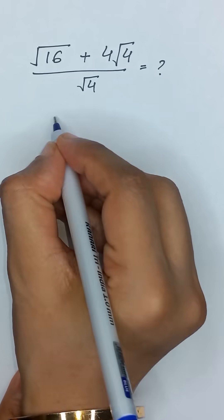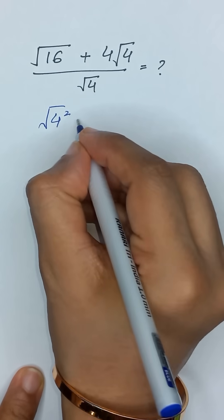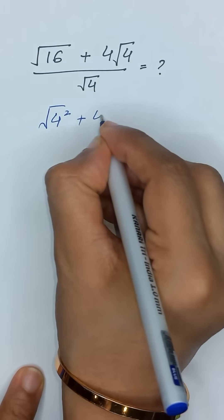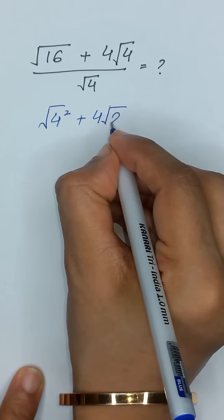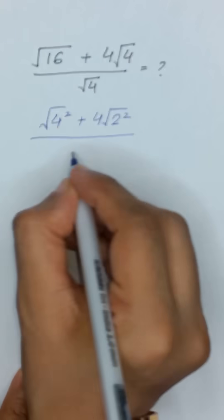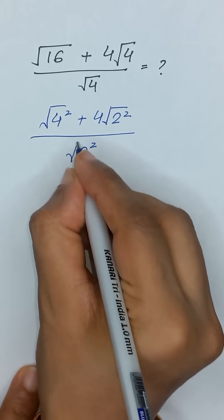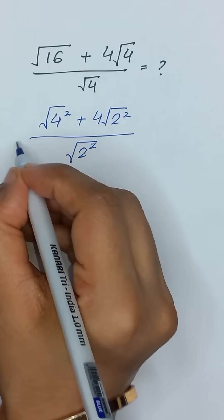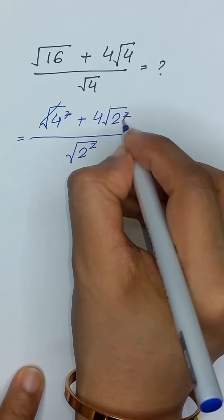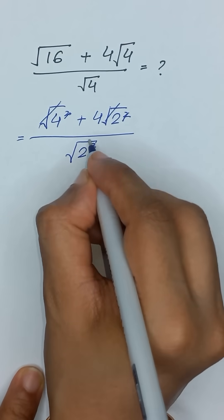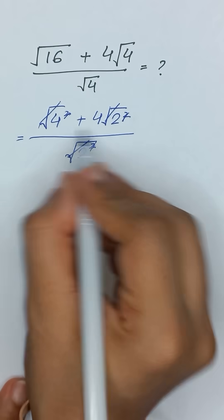So, 16 is the same as 4 squared, and we take its square root, plus 4. This 4 is the same as 2 squared, divided by the same 2 squared and its square root. Now, this square and square root will be cancelled out, this square and square root will be cancelled out, and it will also be cancelled out.